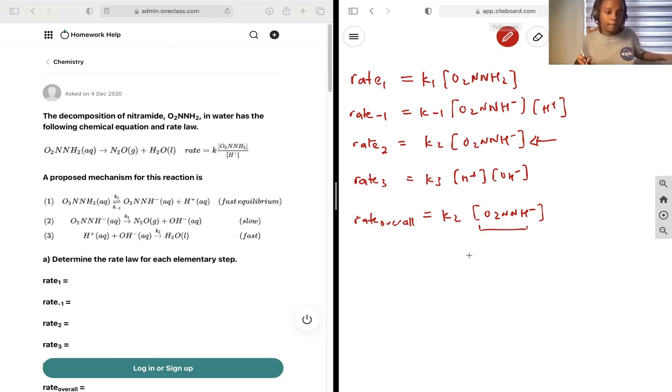It's a species that is produced and consumed within the reaction, so it doesn't appear in our overall reaction, which means we can't put it in our overall rate law because it's virtual in a sense.